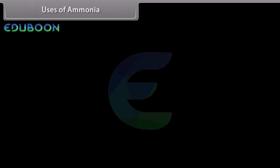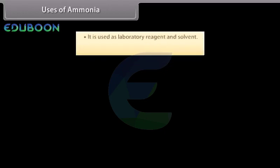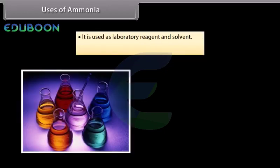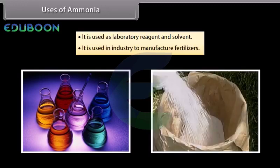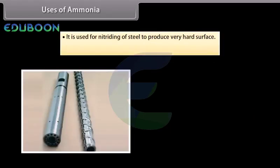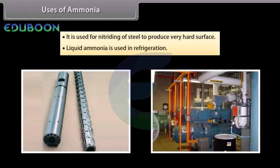Ammonia can form coordinate covalent bonds with transition metal ions to form complexes. The important uses of ammonia are: as a laboratory reagent and solvent; in industry to manufacture fertilizers; for nitriding of steel to produce a very hard surface; and liquid ammonia is used in refrigeration.